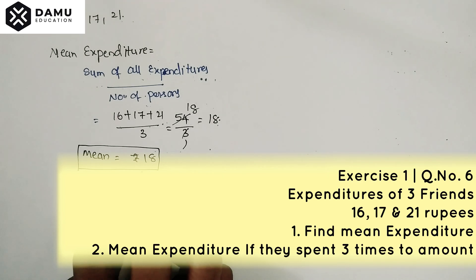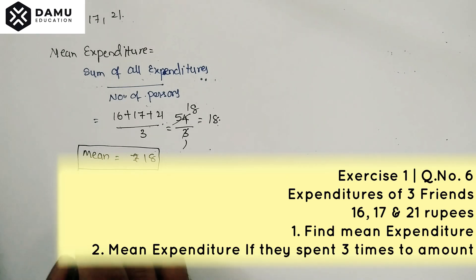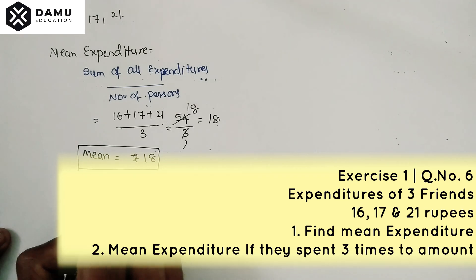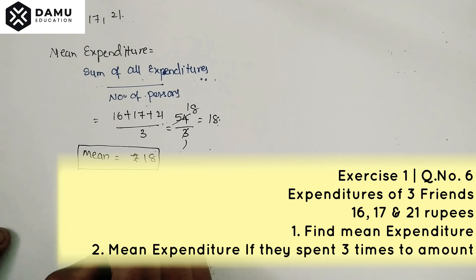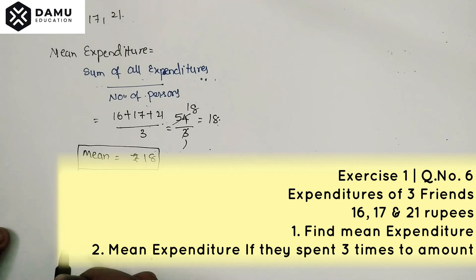The next question asks: if they each spent three times the original amounts, what is the mean expenditure? So three times each: 3 into 16 is 48, 3 into 17 is 51, and 3 into 21 is 63.